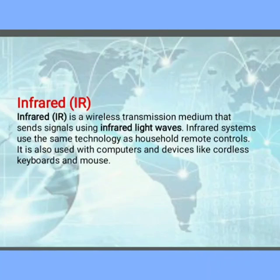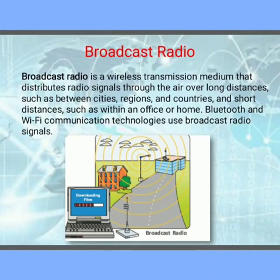First of all we will talk about infrared. In homes we all use a remote for the television; we also use remote control cars, cordless keyboards, and the mouse. They all work on infrared technology. IR is a wireless transmission media that sends signals using infrared light waves.